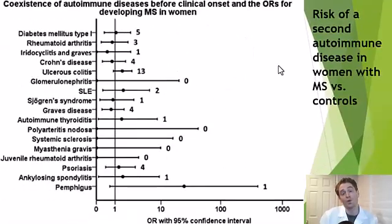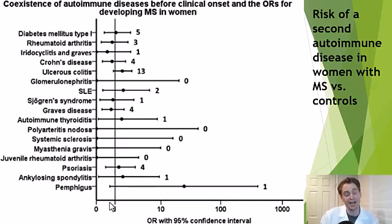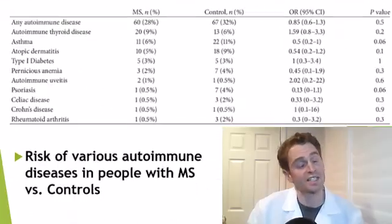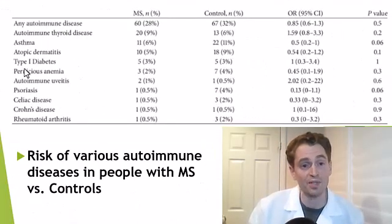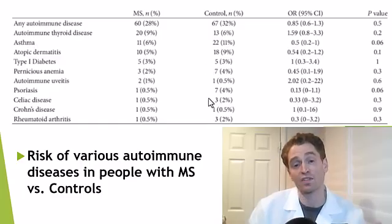I pointed out to him that, although this is true for most autoimmune diseases — type 1 diabetes, vitiligo, Hashimoto's thyroiditis are linked to each other — it's not true for the autoimmune disease I care most about: multiple sclerosis. This is a study on women with MS and their risk of having other autoimmune diseases like lupus or Sjogren's syndrome. An odds ratio of 1 means the same risk as the general population, and the data are all over the place, roughly centering around 1, meaning no increased risk of other autoimmune diseases. A second article looking at the risk of various autoimmune diseases in people with MS versus controls also shows no statistically significant differences.